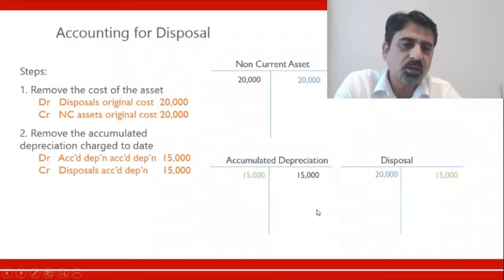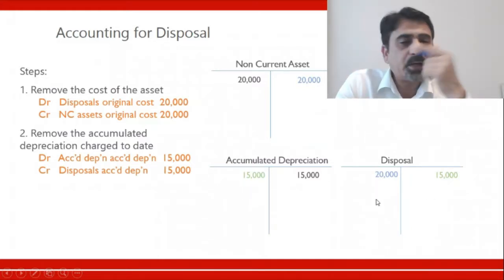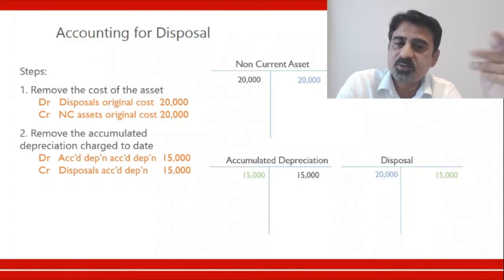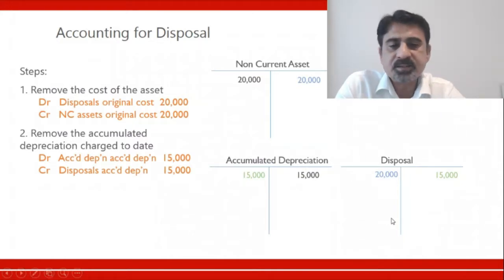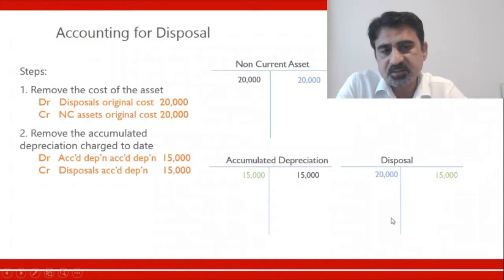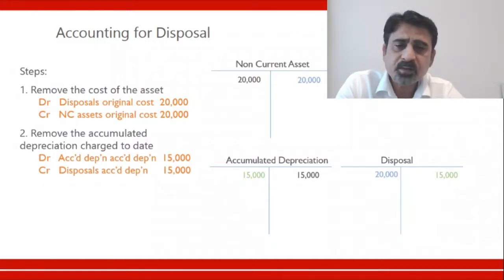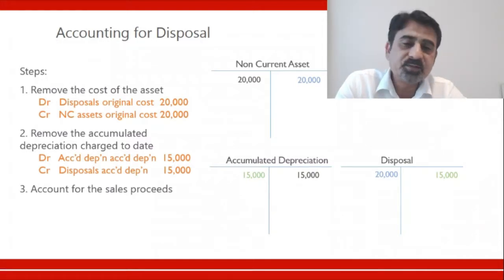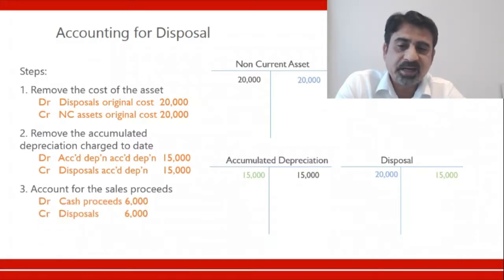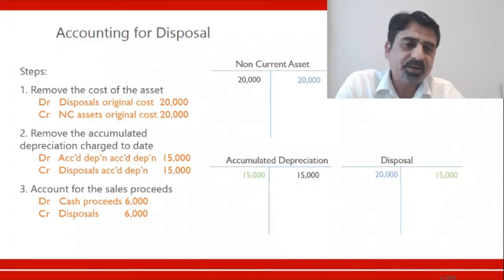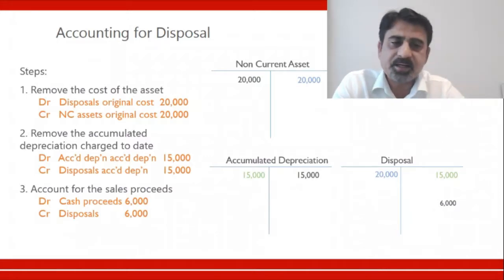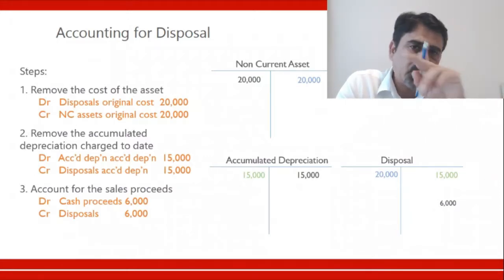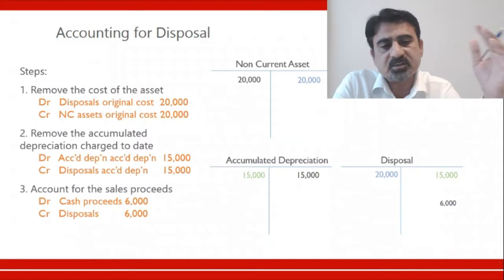These two ledgers are gone and we have transferred their values into the disposal account. Now comes the time for selling the asset. Suppose you take the asset to market and someone is willing to purchase it for 6,000. If you are selling the asset for 6,000, you record the sale proceeds with the double entry: debit cash, credit disposal account. The cash ledger isn't shown here, but you can make a T-account for cash and put 6,000 on the debit side.